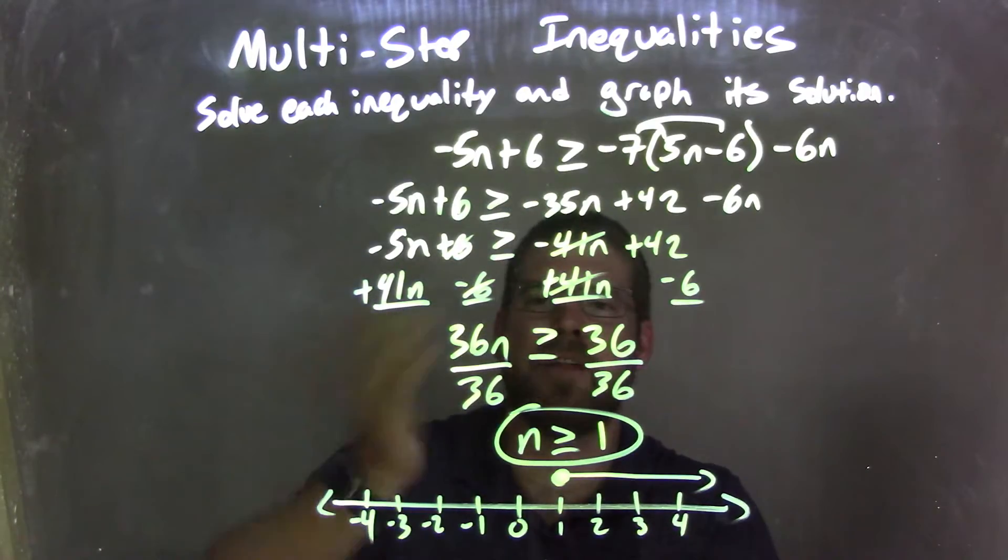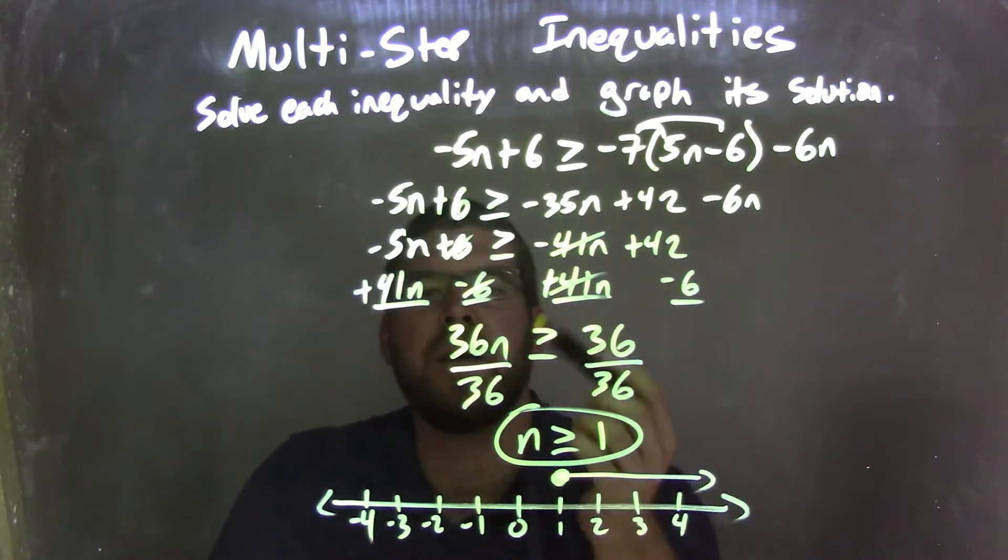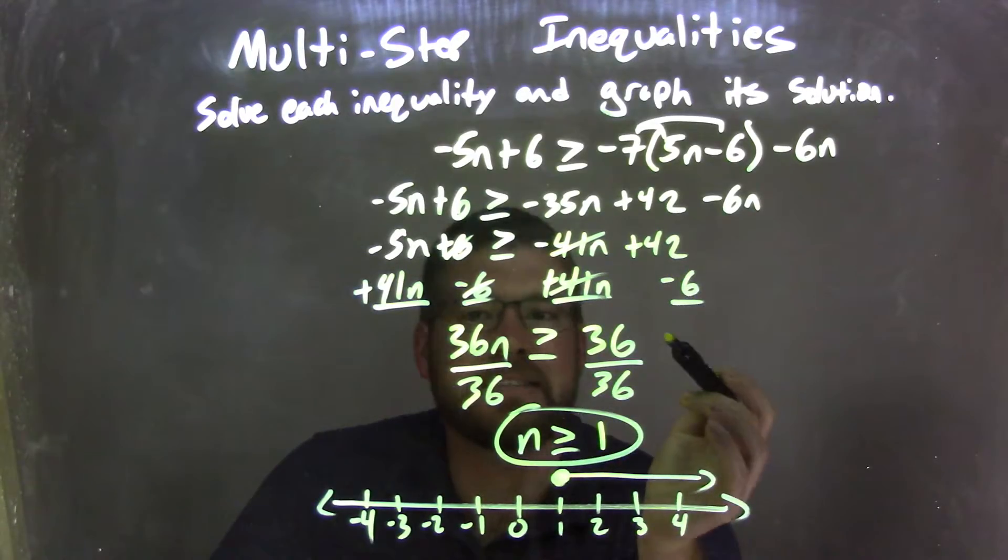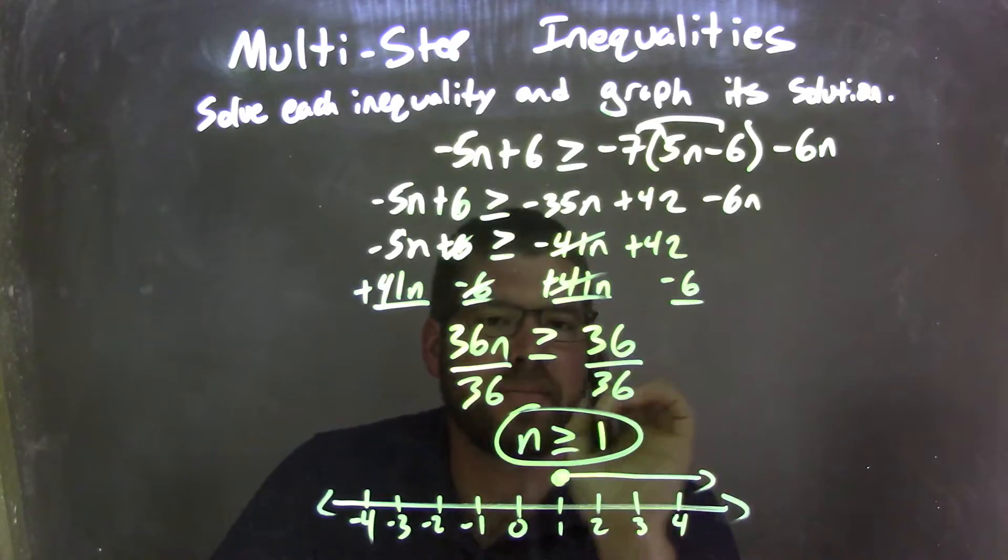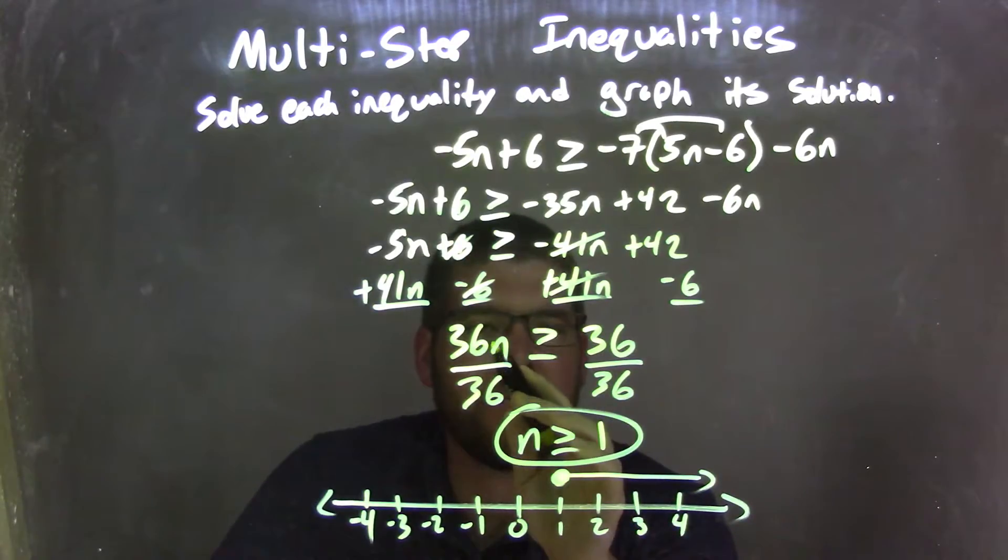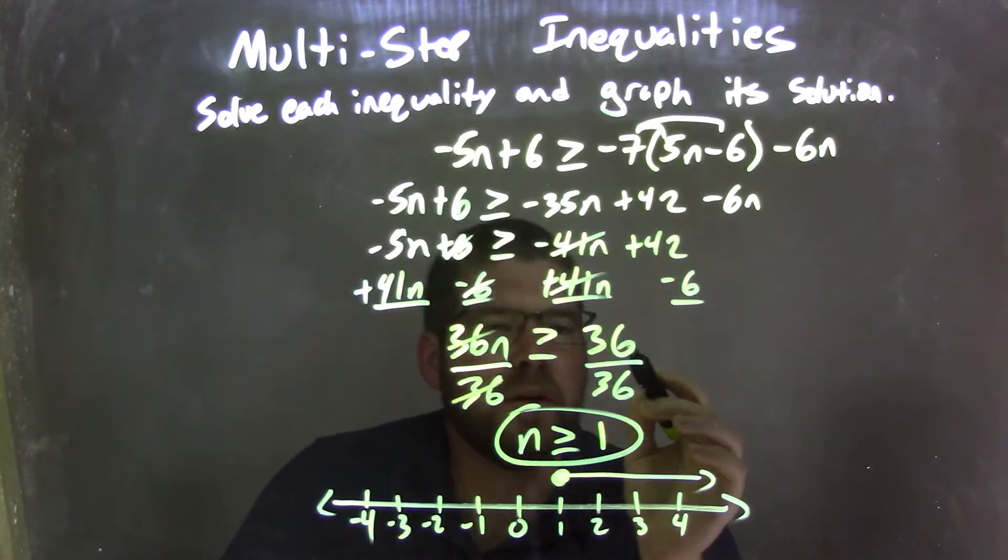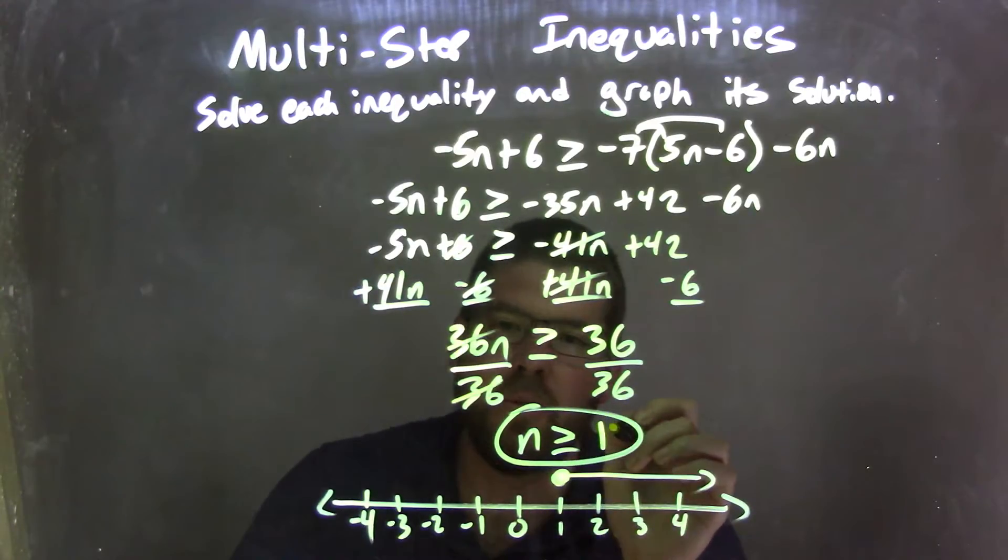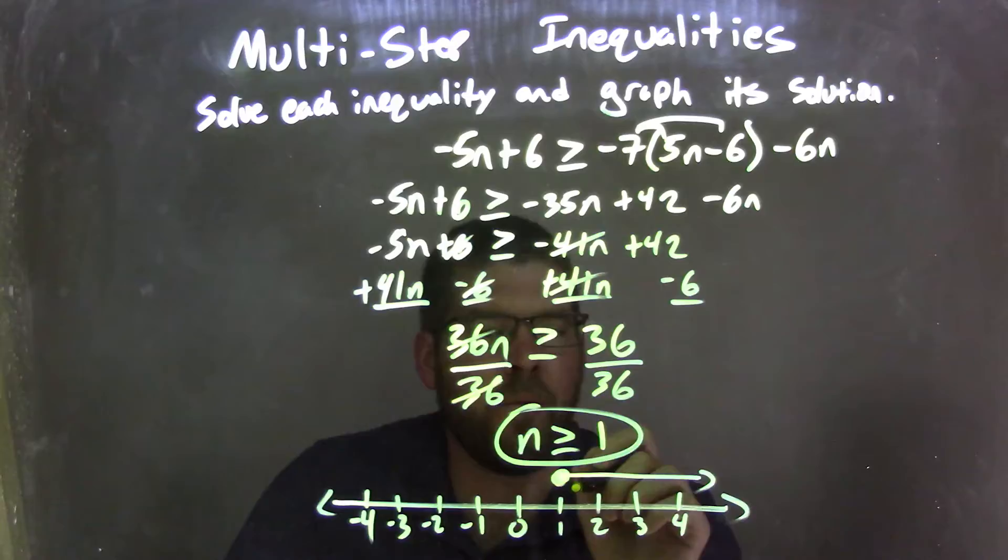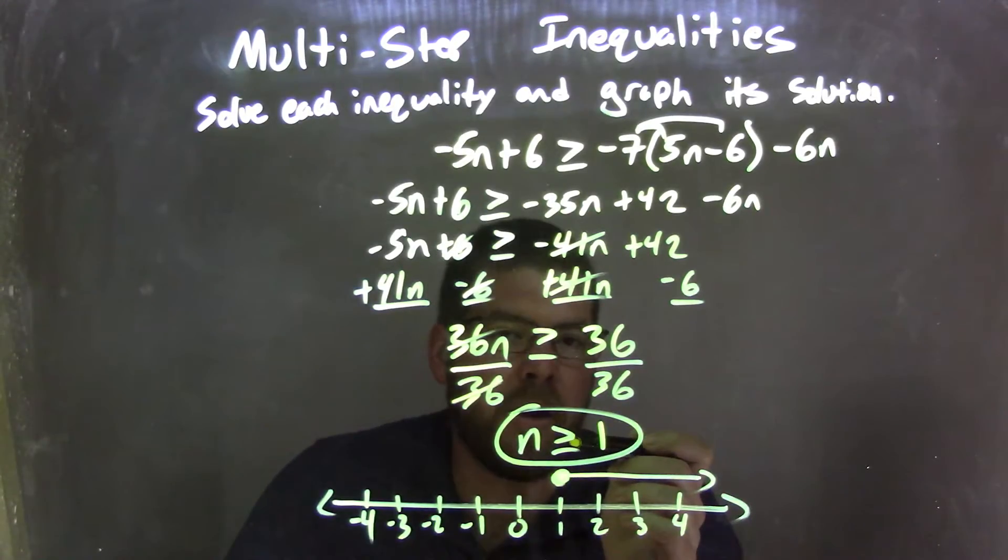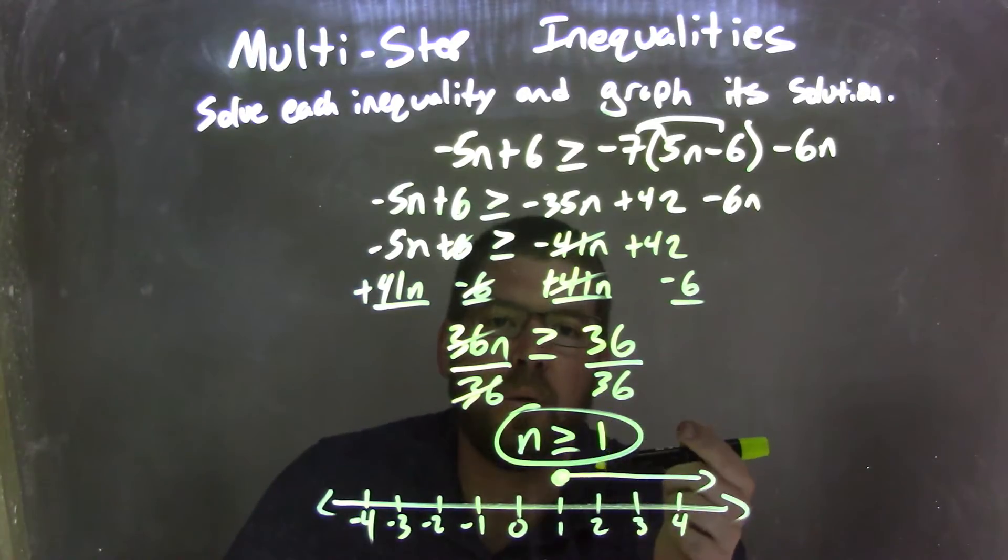Giving me my like terms on each side, my n's on the left, my numbers on the right. Negative 5n plus 41n is 36n, and 42 minus 6 is also 36. Well I have 36n here, so multiplication, so I divide by 36 on both sides, giving me n by itself on the left. And 36 divided by 36 is 1 on the right, so now we have n is greater than or equal to 1. So now I need to graph it, it's a closed circle at 1 because n can equal 1, and then I put my arrow to the right because n is greater than that 1 also. So we have our graph here that matches our final answer, which is n is greater than or equal to 1.